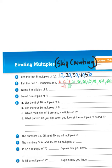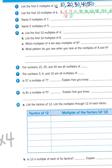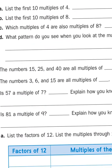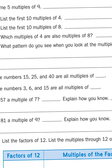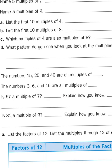So, let's take a look at another problem. Look at number 6. The numbers 15, 25, and 40 are all multiples of blank. So, you've got to ask yourself, what do these three numbers have in common?